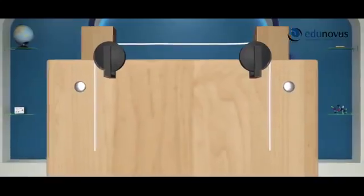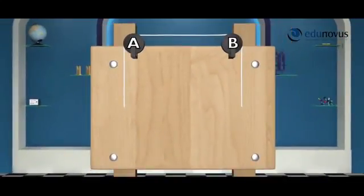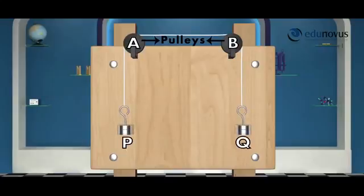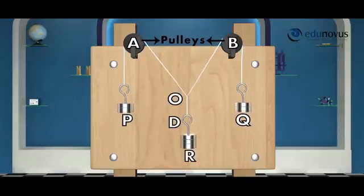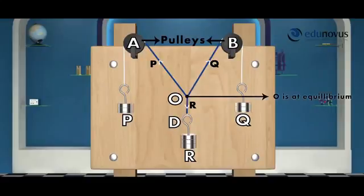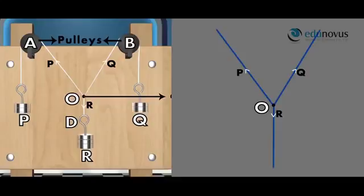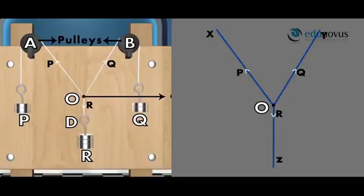Here you can see two pulleys A and B are fixed to a wooden board. Two weight hangers P and Q are attached by a string and passed over the pulleys A and B. A third weight hanger R is attached at midpoint O of the string. The point O will be in equilibrium under the action of three forces P, Q and R — three coplanar forces on X, Y and Z acting at point O.